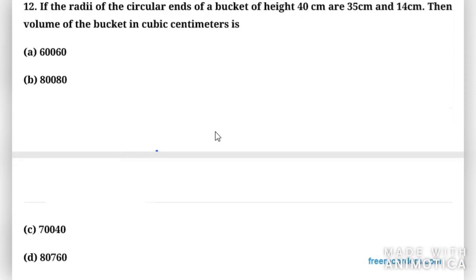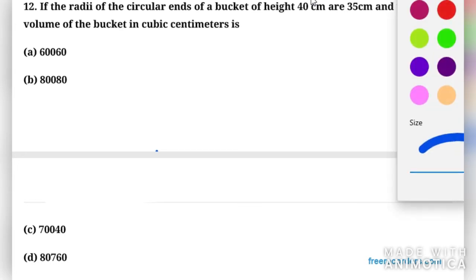Let's start with the next question. It says if the radii of the circular ends of a bucket of height 40 cm are 35 cm and 14 cm, then the volume of the bucket in cubic centimeters. We need to find what will be the volume of this particular bucket.